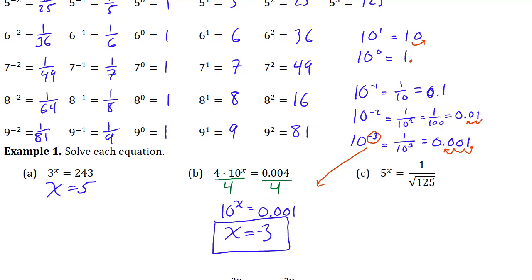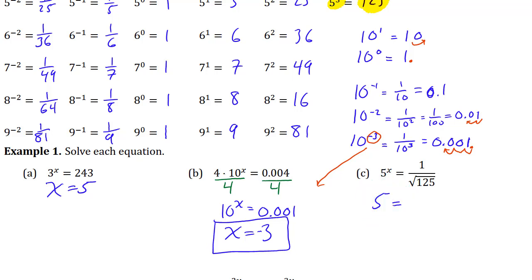This one's getting a little bit more complicated. You might not know what exponent of 5 gives you this, but the trick is that you have 125 in the denominator. And 125 is 5 to the power 3 — so it's a good thing you just practiced that. So I'm going to use that fact and rewrite this as 5 to the power x on the left, and on the right I'm going to write it as the square root of 5 to the power 3.